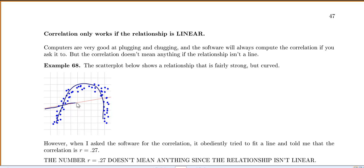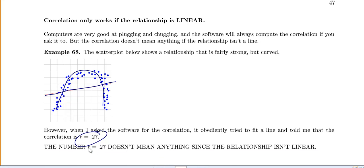So I drew my line in and it said that R is 0.27. But that correlation of 0.27 doesn't mean anything because the relationship isn't linear. So I shouldn't have found that at all.